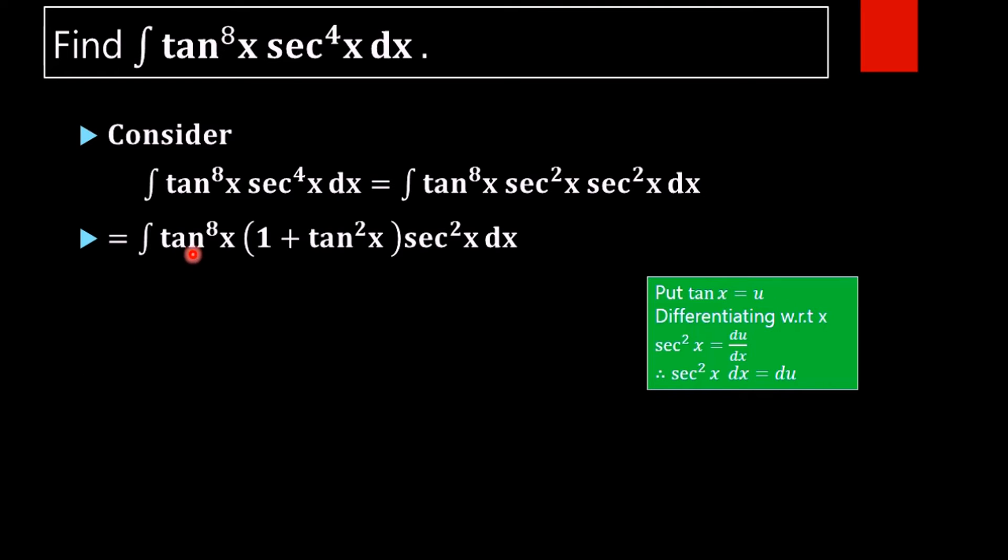Next we are going to substitute it here. tan x equals u, then tan^8(x) will give u^8, tan^2(x) will give u^2, sec^2(x) gives du, so we get the function in an integrable form.